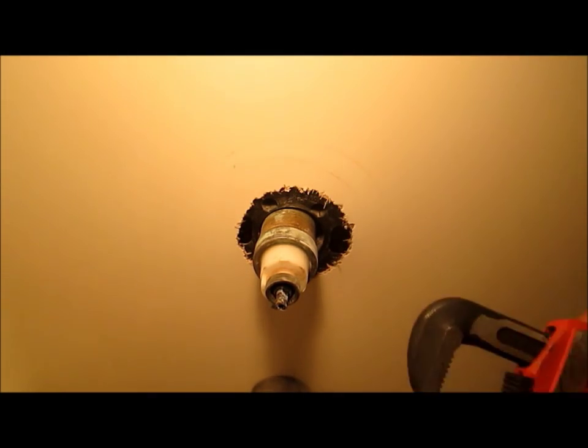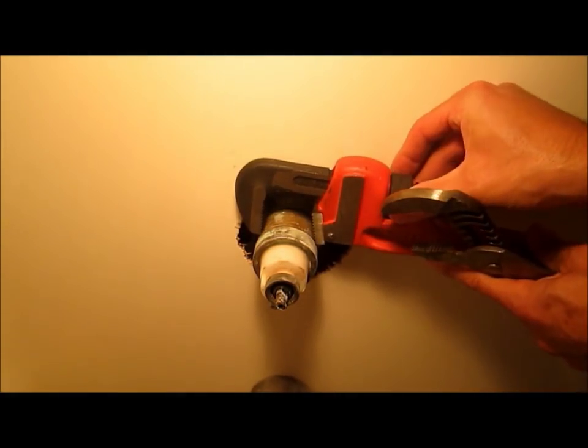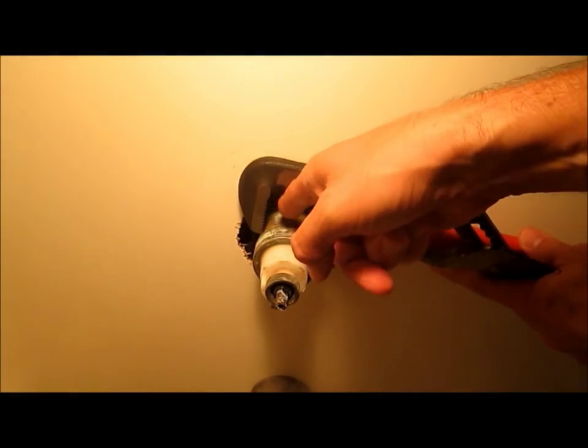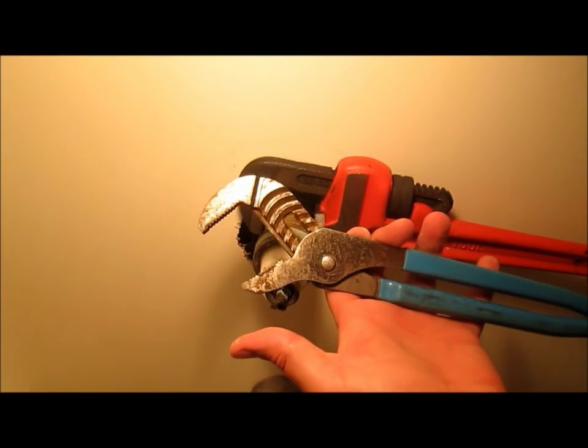So what I'm going to do is use one wrench, this is a pipe wrench, to hold this piece firm while I loosen this with a pair of channel locks.